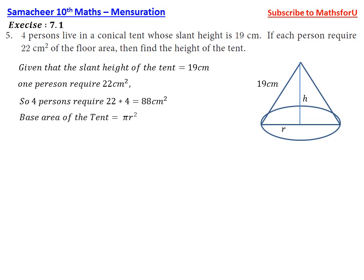Base area of the tent is πr². This area should be equal to 88 cm². So πr² = 88.